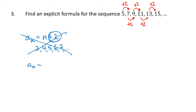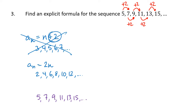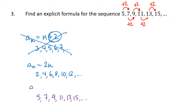So what pattern gives us numbers that go up by 2? Well, 2 times n will give us numbers that go up by 2 each time — the sequence 2, 4, 6, 8, 10, 12, and so on. That's not right yet, but it's closer because it at least gives us that pattern of each number being 2 more than the one before. To get from this wrong-but-better answer to the numbers we want — 5, 7, 9, 11, 13, 15 — we just add 3 to all of them. So the answer is a_n equals 2n plus 3. Plugging in 1, 2, 3, 4, and so on gives us 5, 7, 9, 11, etc.